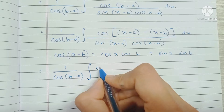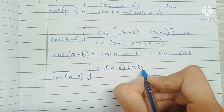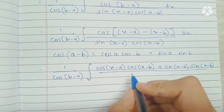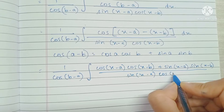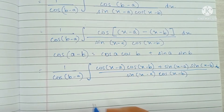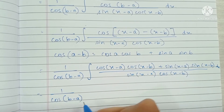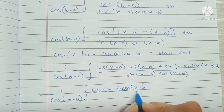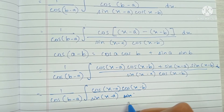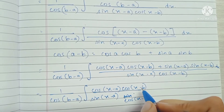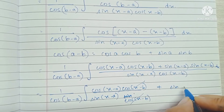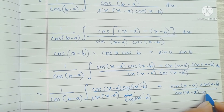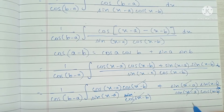The denominator still remains the same. Now we separate the integrand into two separate fractions. The first fraction involves cos(x-a)cos(x-b) terms, and the second involves sin(x-a)sin(x-b) terms. You can clearly see that certain terms cancel out in each fraction, simplifying the expression significantly.